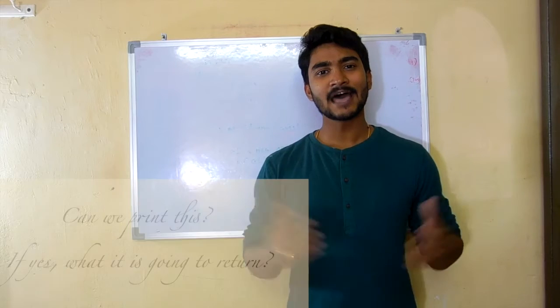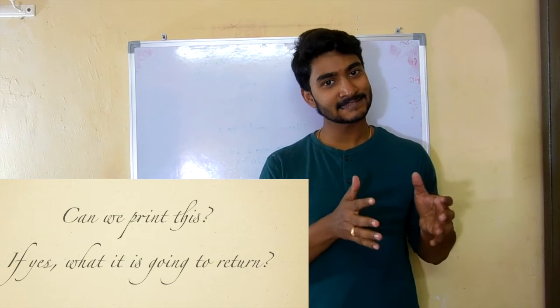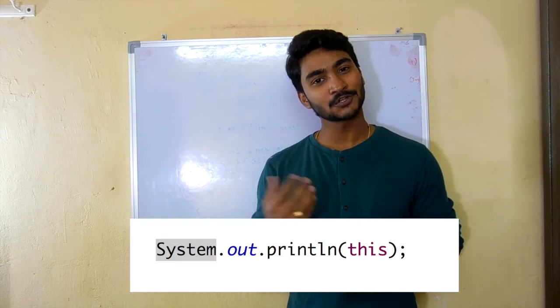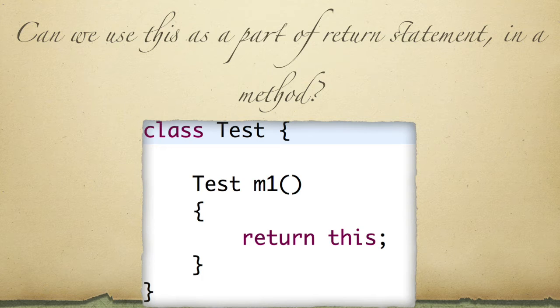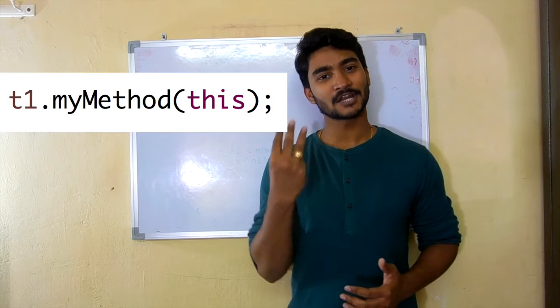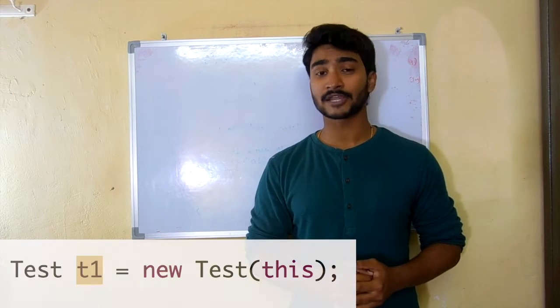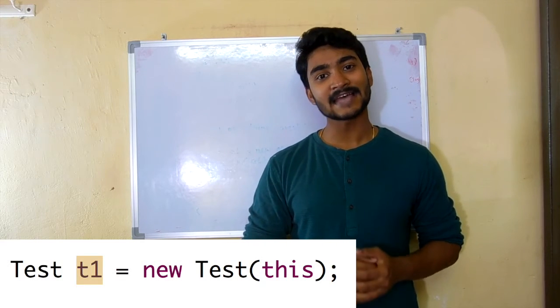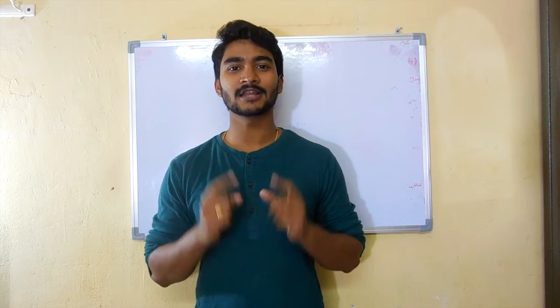Question number one: can you print 'this', and if you can, what is it going to return to you? Question number two: can you use 'this' as part of a return statement in a method? Question number three: can you pass 'this' inside a method argument or inside a constructor argument?